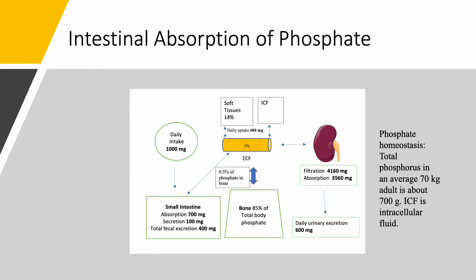14% of body phosphate is in the soft tissues, while 85% is in the bones. Only 0.5% of the phosphate in the bone is in constant exchange with the extracellular fluid. In the serum we only have about 1% of phosphate — similar to what we discussed for potassium, magnesium, and calcium. The kidneys filtrate approximately 4,160 milligrams and reabsorb 3,560 milligrams, leaving a daily urinary excretion of 600 milligrams. So with 1,000 mg in, 400 in stool and 600 in urine — net is zero: steady state.